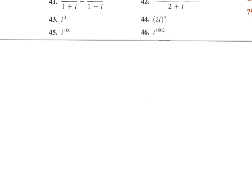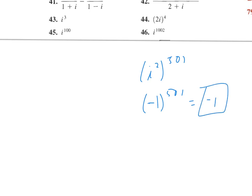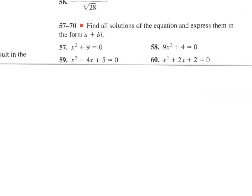Number 46: I like to turn it into i squared on the inside, so the exponent on the outside would be 501. I know i squared is negative one, and negative one to the 501st power — an odd power — stays negative one.